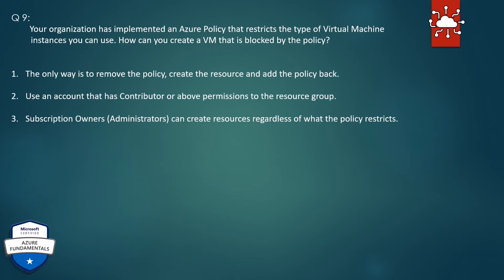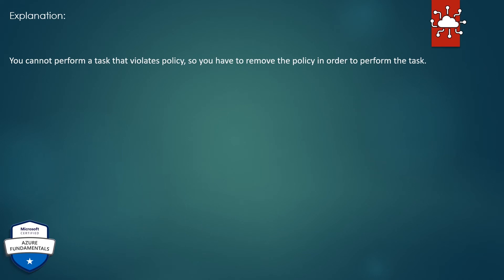Question 9. Your organization has implemented an Azure policy that restricts the type of virtual machine instances you can use. How can you create a VM that is blocked by the policy? 1. The only way is to remove the policy, create the resource, and add the policy back. 2. Use an account that has contributor or above permissions to the resource group. 3. Subscription owners and administrators can create resources regardless of what the policy restricts. The correct answer is: the only way is to remove the policy, create the resource, and add the policy back. Explanation: You cannot perform a task that violates policy, so you have to remove the policy in order to perform the task.